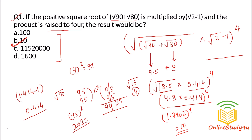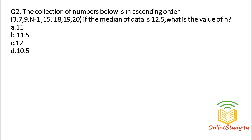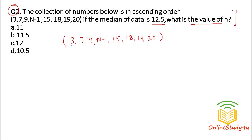Now question number 2. A collection of numbers is given in ascending order: 3, 7, 9, n-1, 15, 18, 19, 20. If the median of the data is 12.5, then what is the value of n? Recently I uploaded a video on statistics, so using the same concept you will be easily able to solve this question.